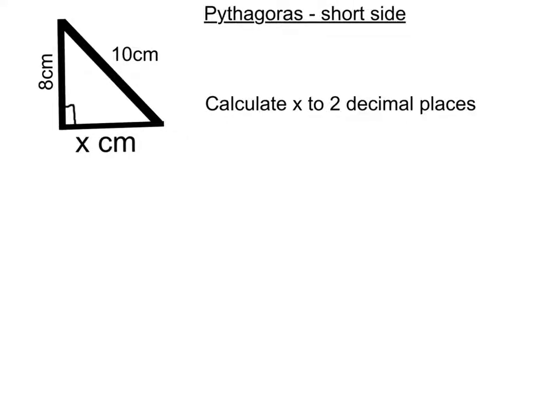In this video we're going to look at calculating short sides of right angle triangles using Pythagoras. If we remember that Pythagoras is a squared plus b squared equals c squared, where c is the longest side.